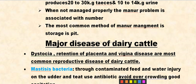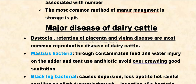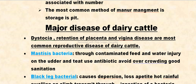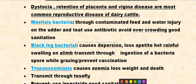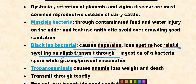Another topic is antibiotic-related resistance. Black leg is a bacterial disease that causes depression in cattle. Depression is one of the key signs associated with this condition.